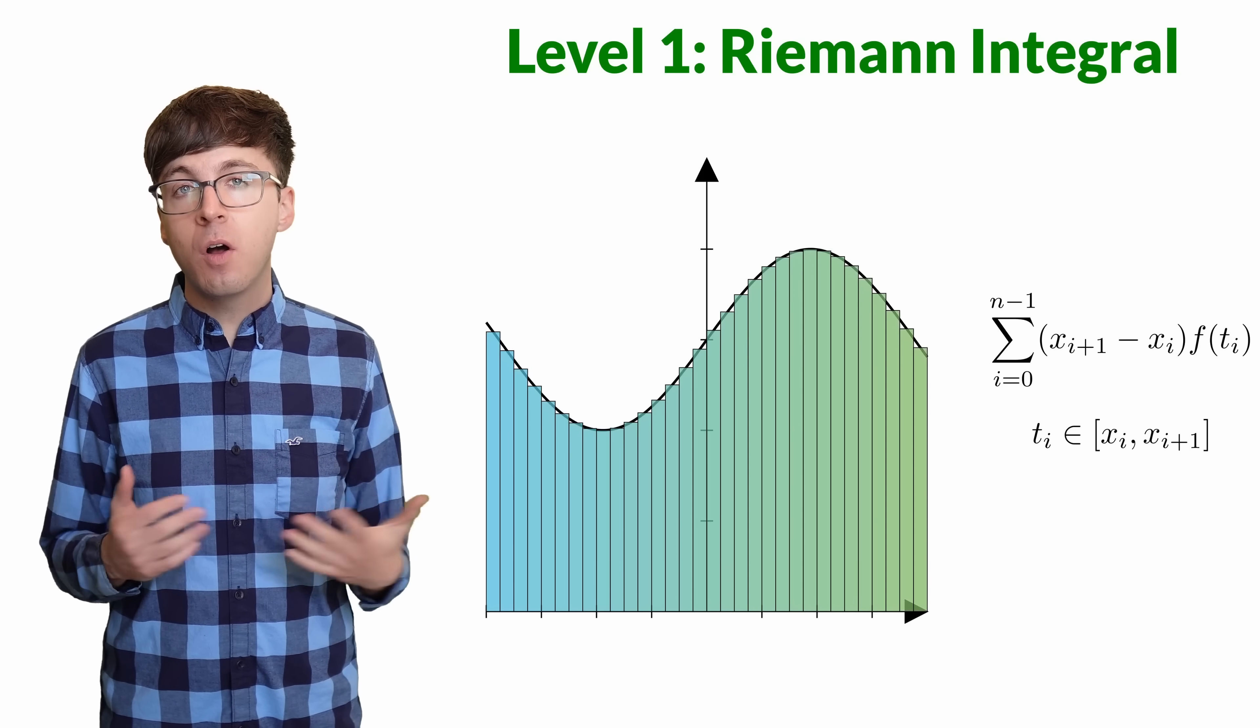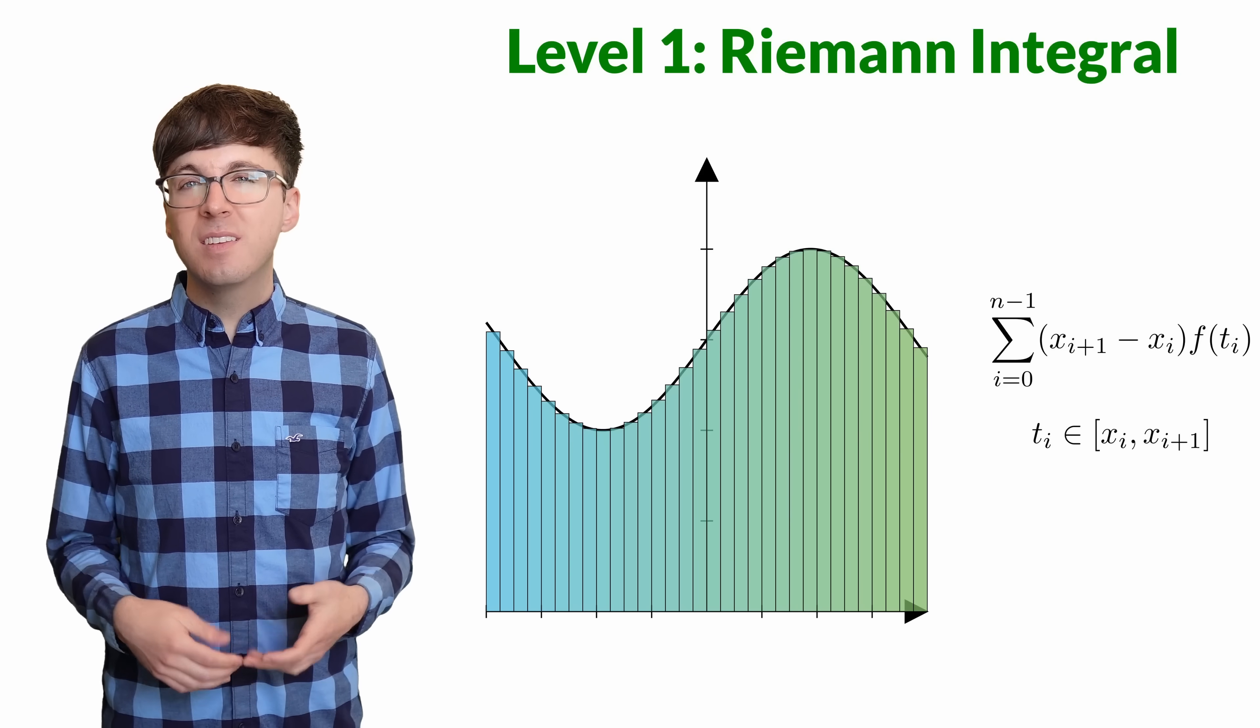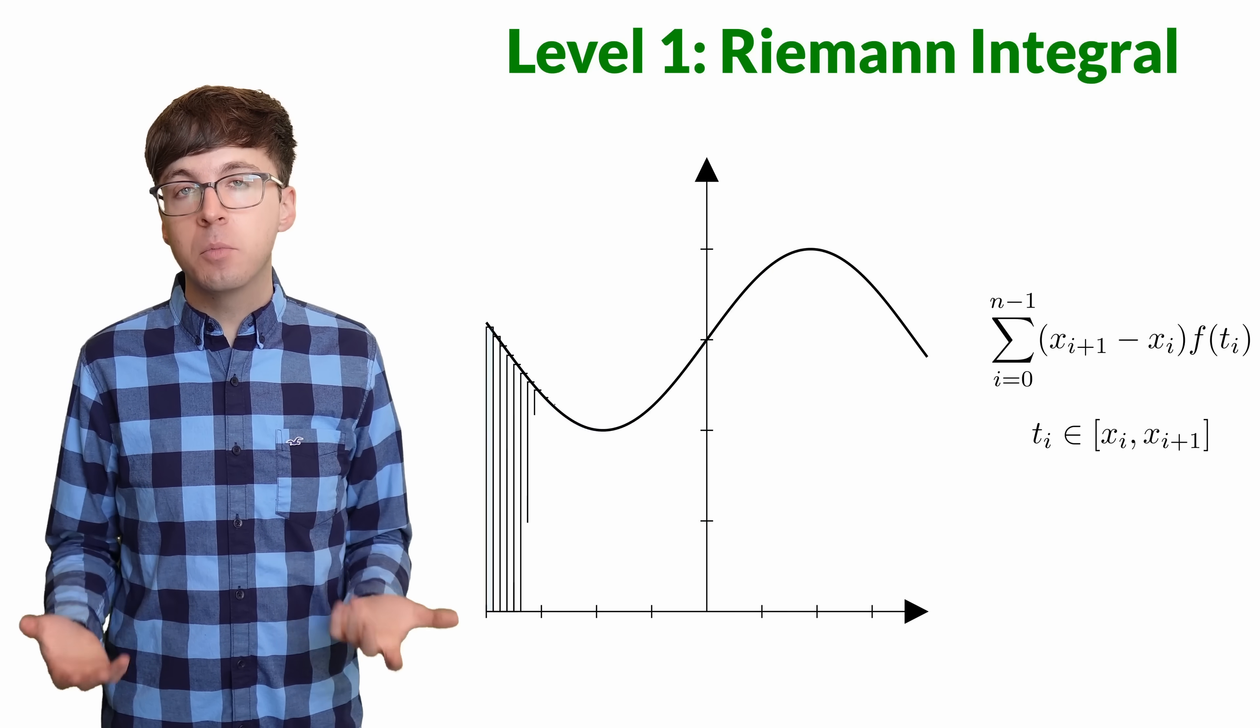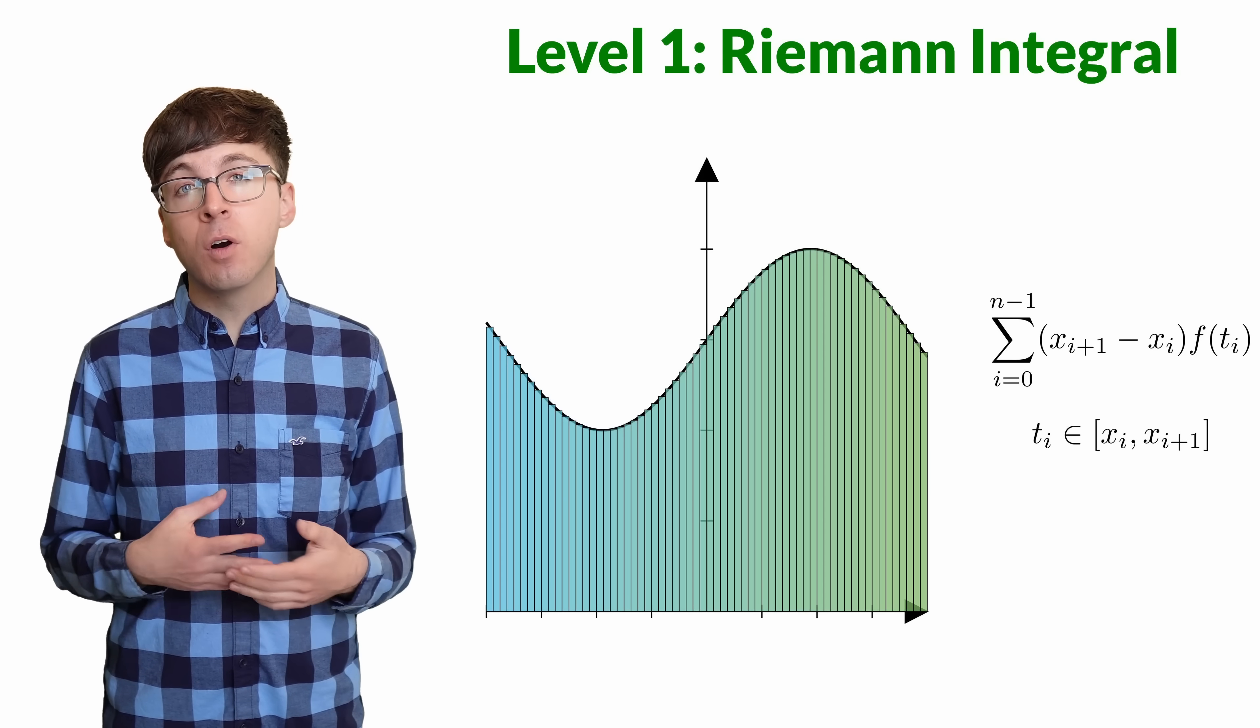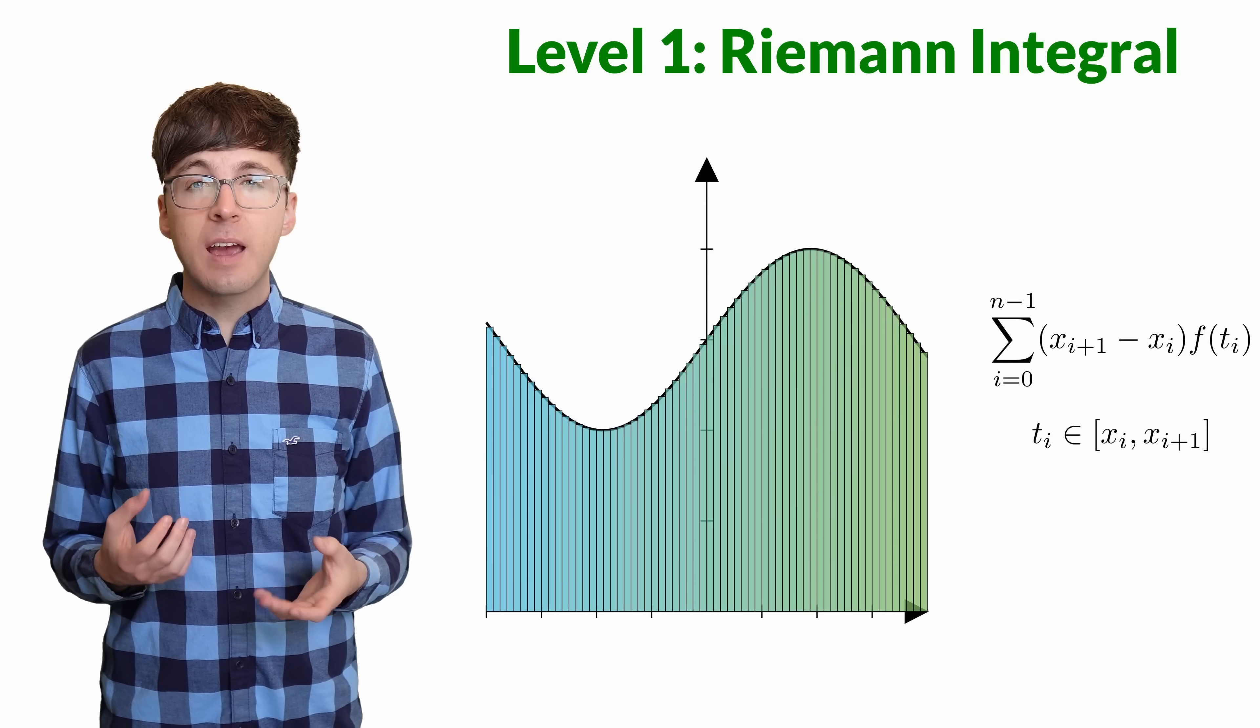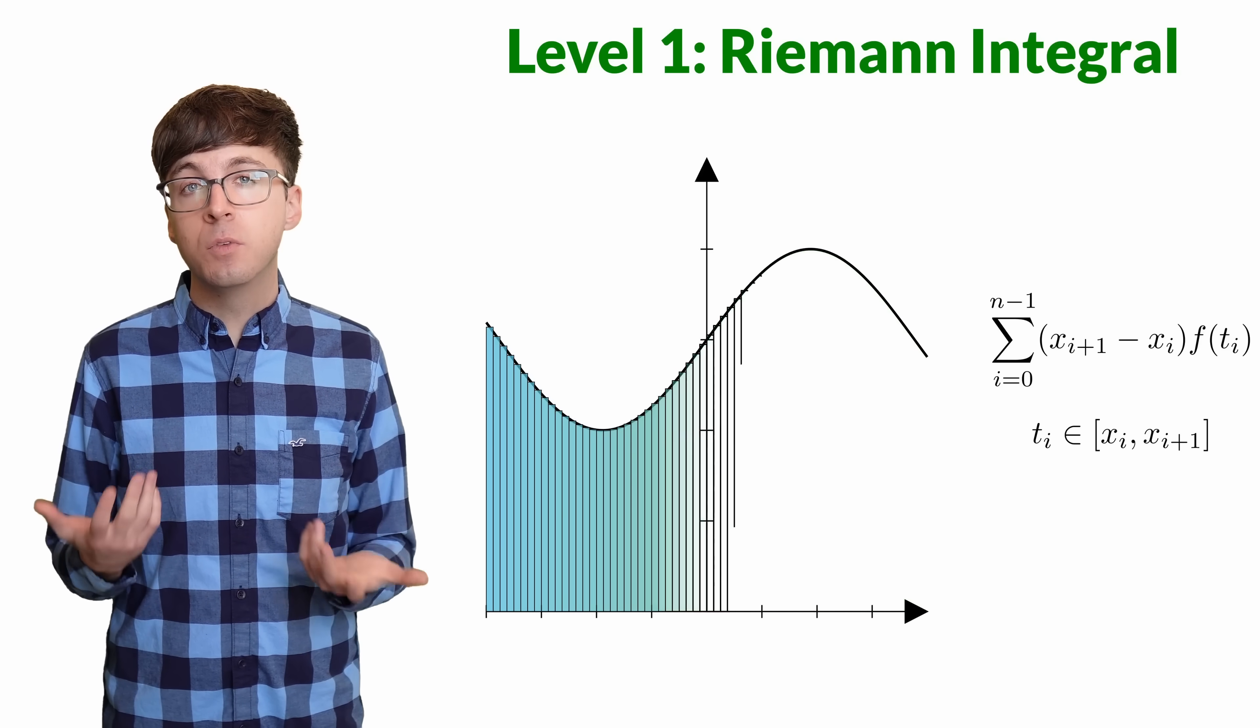The Riemann integral is essentially the limit of these Riemann sums as the mesh goes to zero. We can build all of the typical calculus facts from this. But it's a bit hard to work with since this definition allows us to use any partition and any sample points for that partition. To prove an integral rule using this definition, we have to account for all of those possibilities.